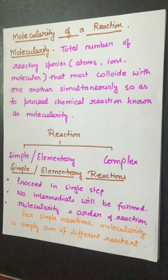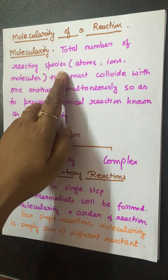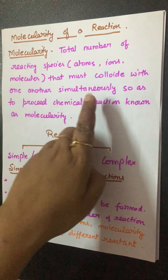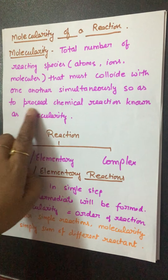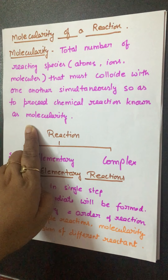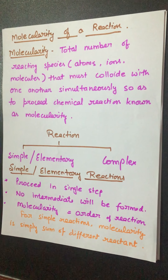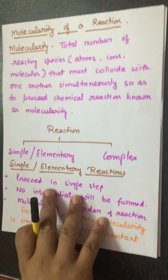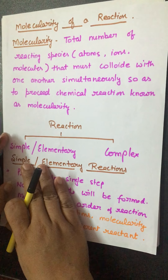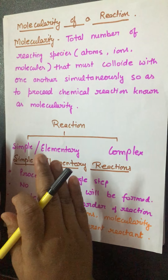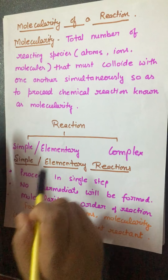So molecularity is the total number of reacting species — atoms, ions, or molecules — that must collide with one another simultaneously so as to proceed with a chemical reaction. To understand molecularity, we must first know the types of reactions. Reactions are of two types: simple and complex. Simple reactions are also known as elementary reactions.